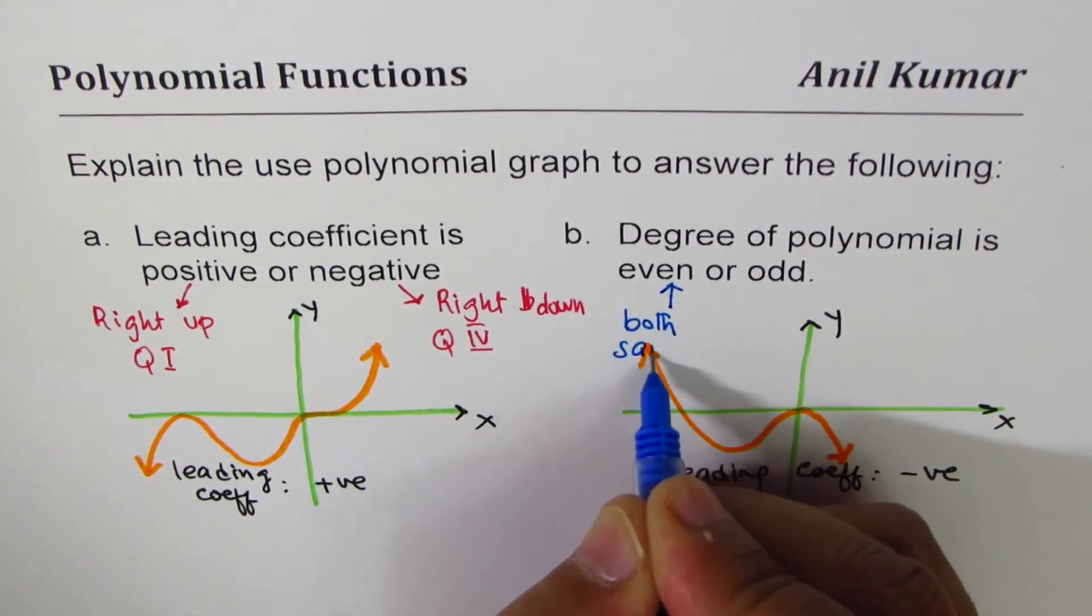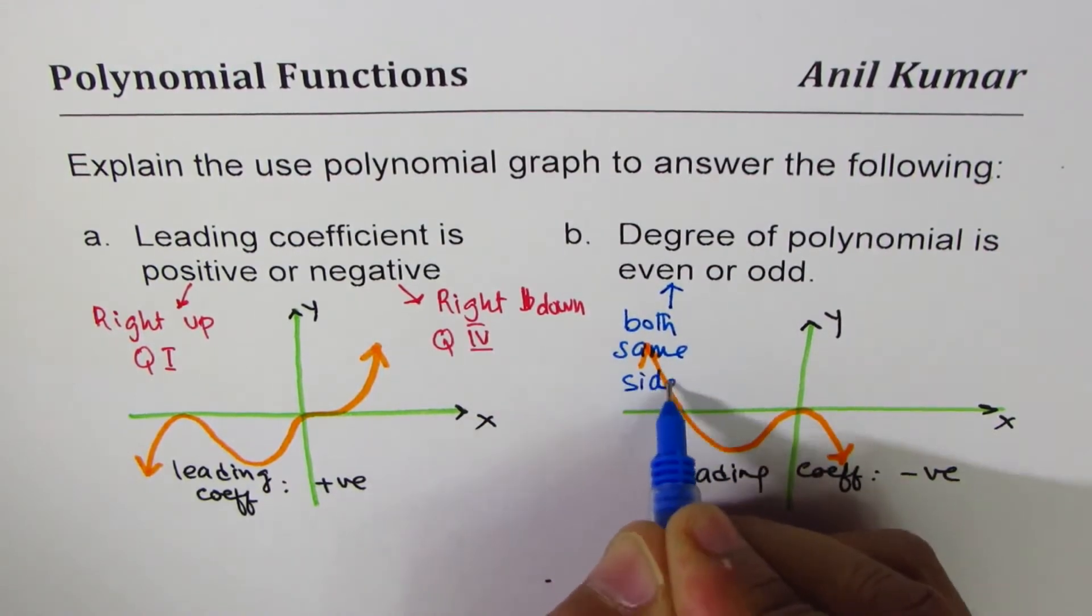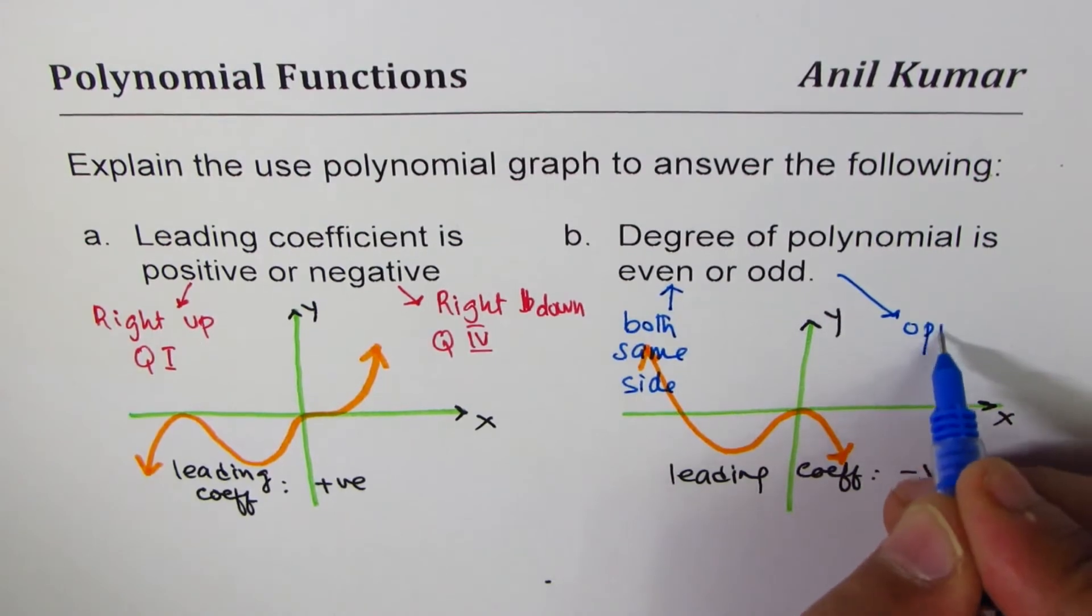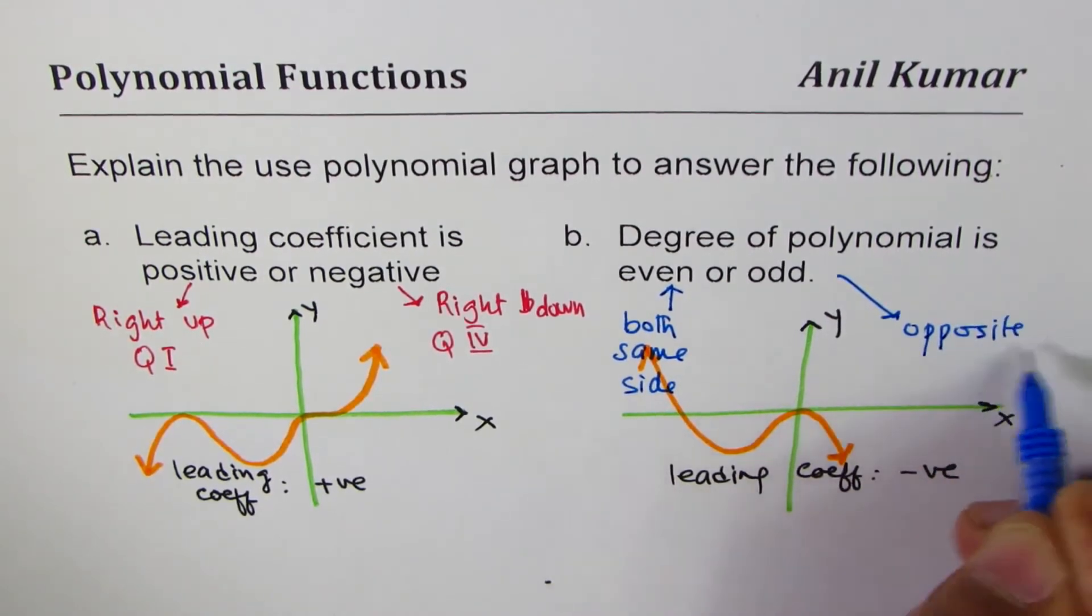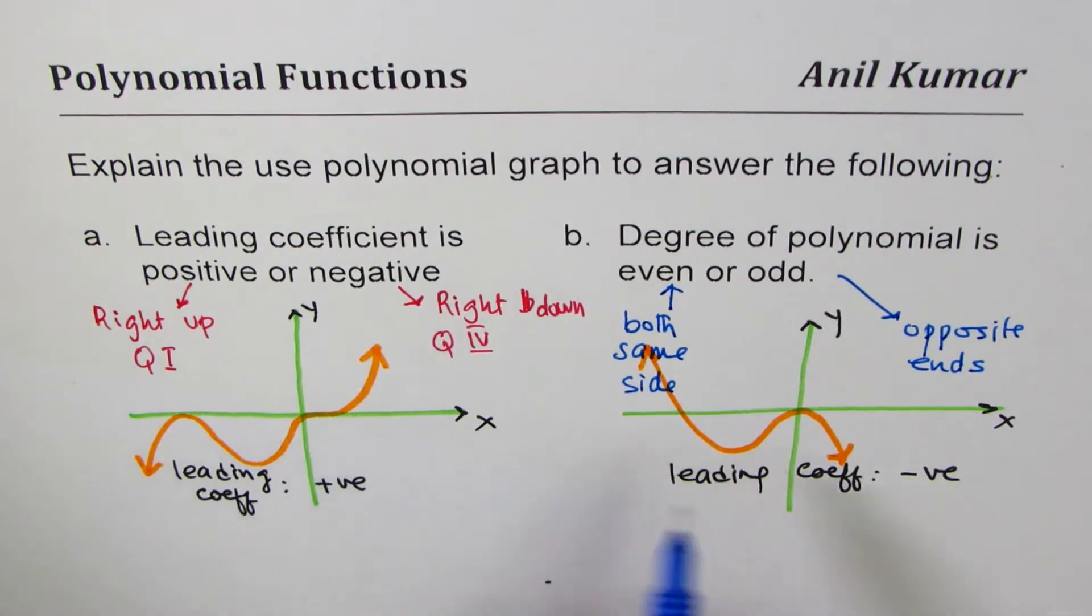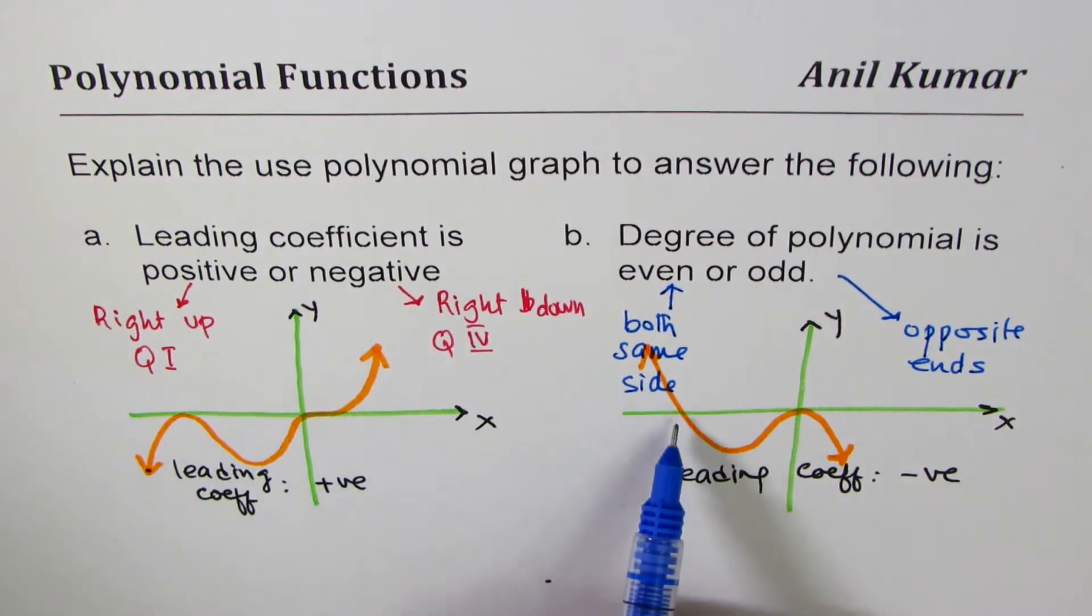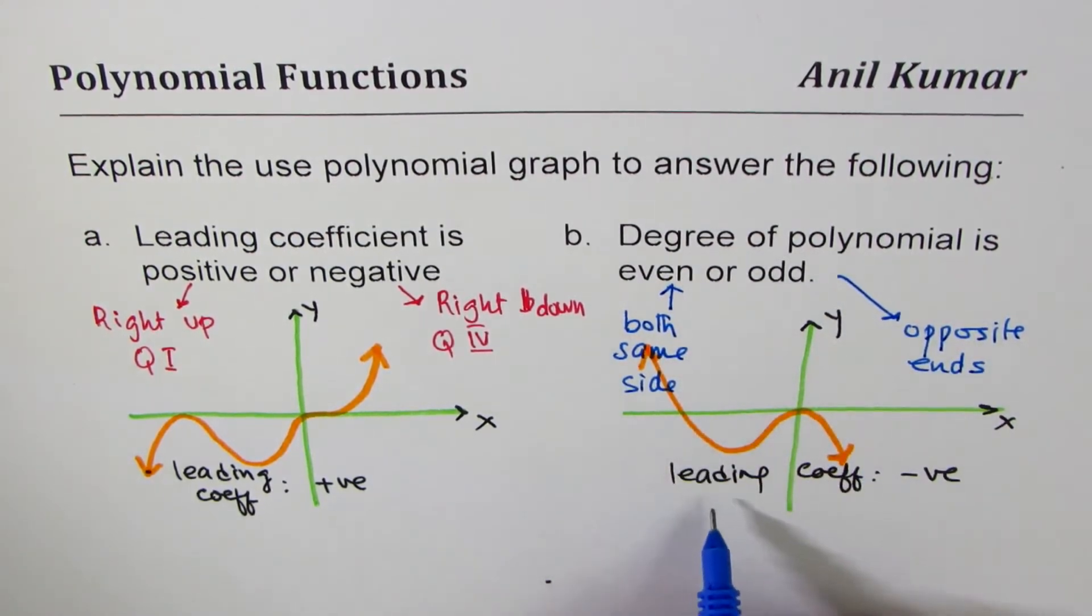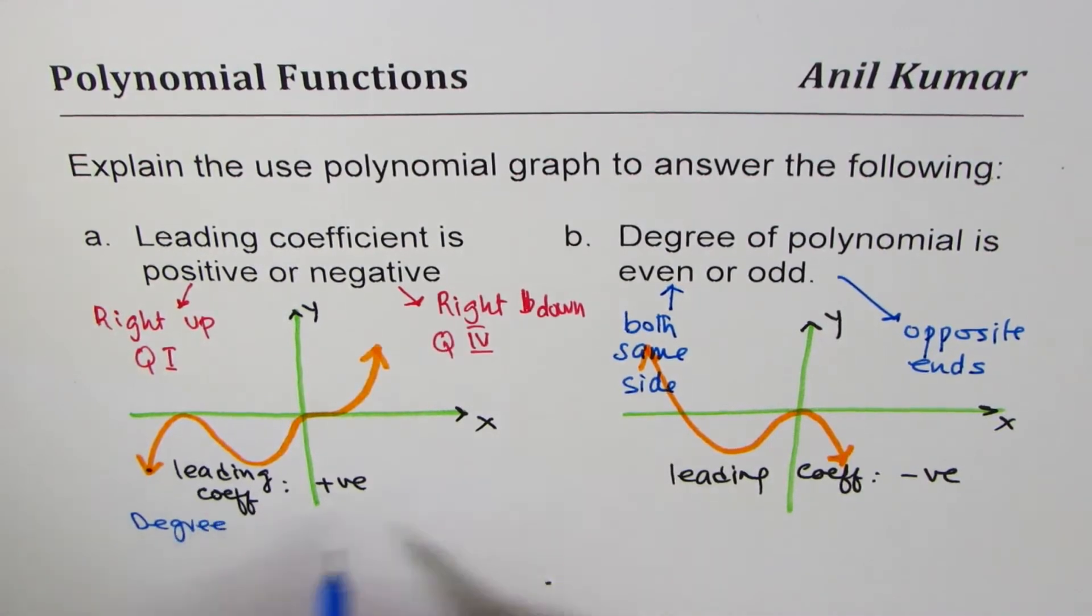For odd, both will face opposite ends. Now in our case, both are in the opposite ends. Do you see the end behavior? It goes from 3 to 1, and in this case from 2 to 4, opposite ends. So for these graphs, degree of the polynomial should be - we can write here - degree is odd.